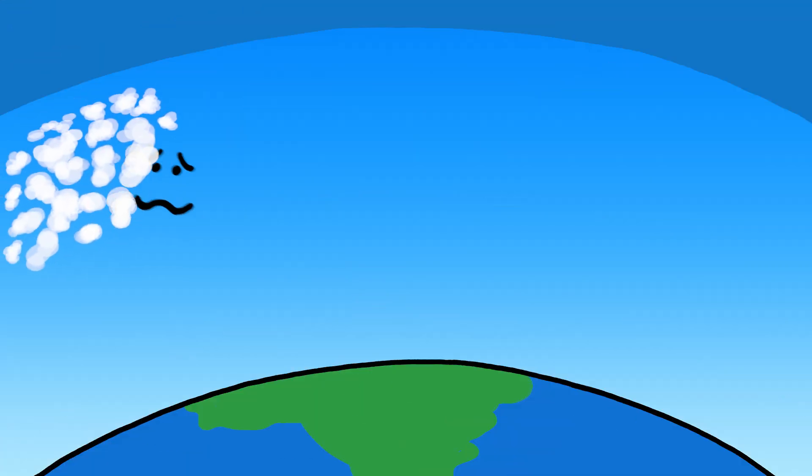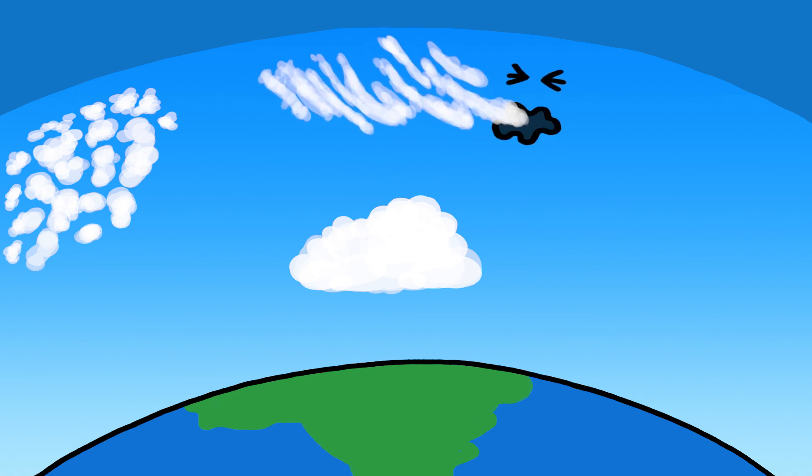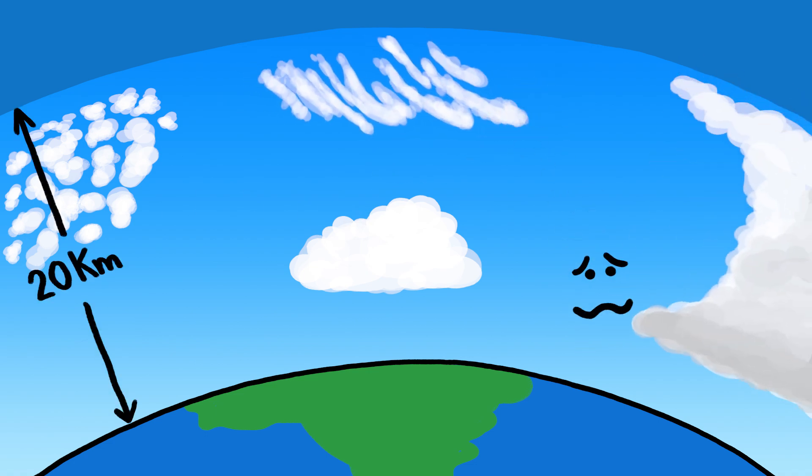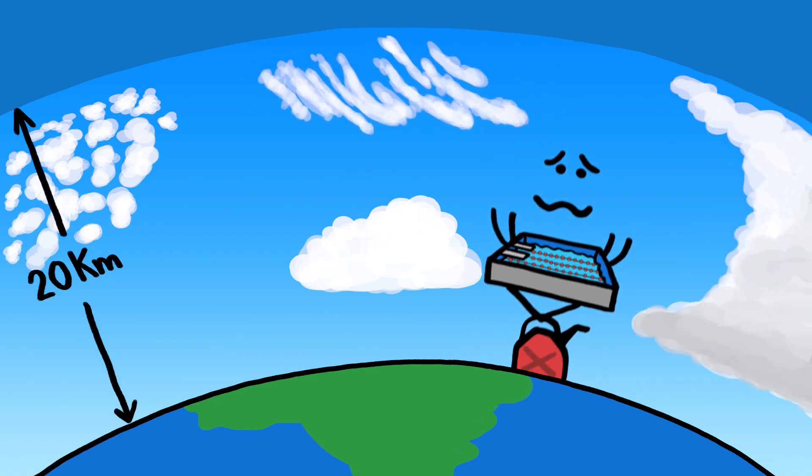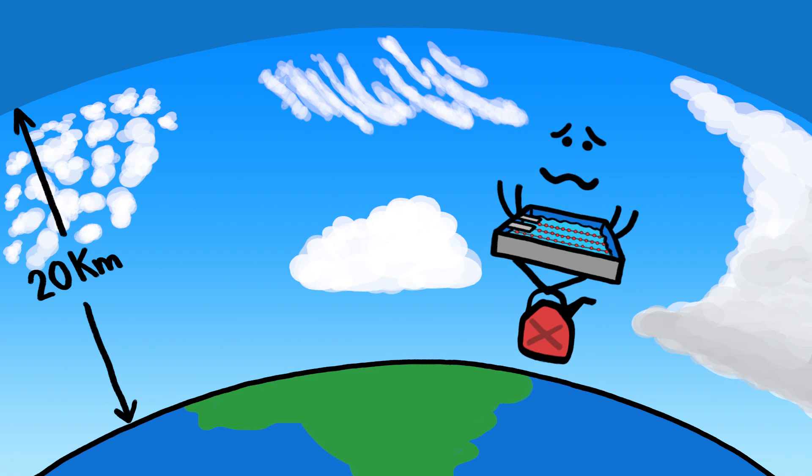And yet, our atmosphere manages to pump out one cloud after another all over the world at altitudes of up to 20 kilometers above sea level, using water and fuel carried all the way from Earth's surface.